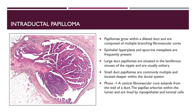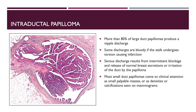Intraductal papilloma: papillomas grow within a dilated duct and are composed of multiple branching fibrovascular cores. Epithelial hyperplasia and apocrine metaplasia are frequently present. Large duct papillomas are situated in the lactiferous sinuses of the nipple and are usually solitary. Small duct papillomas are commonly multiple and located deeper within the ductal system. More than 80% of large duct papillomas produce a nipple discharge. Some discharges are bloody if the stalk undergoes torsion causing infarction. Serous discharge results from intermittent blockage and release of normal breast secretions or irritation of the duct by the papilloma. Most small duct papillomas come to clinical attention as small palpable masses or as densities or calcifications seen on mammograms.